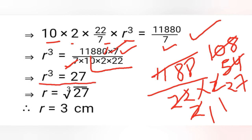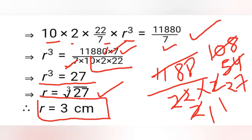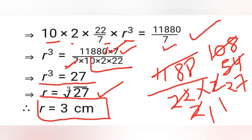Now we take the cube root of both sides: r = ∛27 = 3. So the radius of the ice cream cone is 3 centimeters. The question is complete.